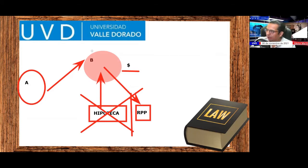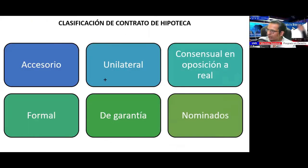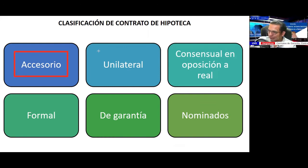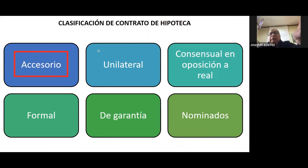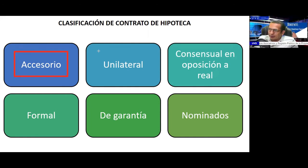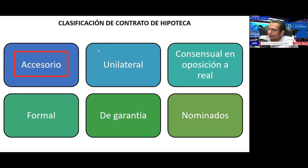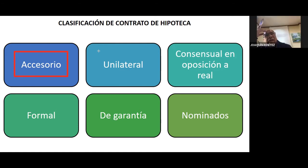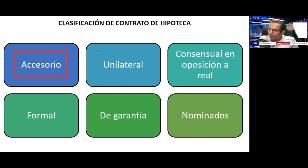Characteristics of the hipoteca contract: it is accessory because it depends on a principal contract. Maestro Joaquín explains: one requests a credit guaranteed with a hipoteca; once the obligation is fulfilled, one requests cancellation of the hipoteca before a notario público, formalizing it and inscribing the cancellation in the Registro Público de la Propiedad.